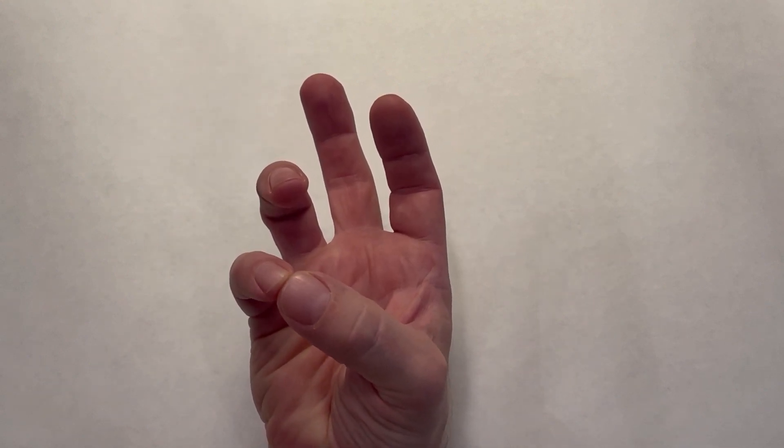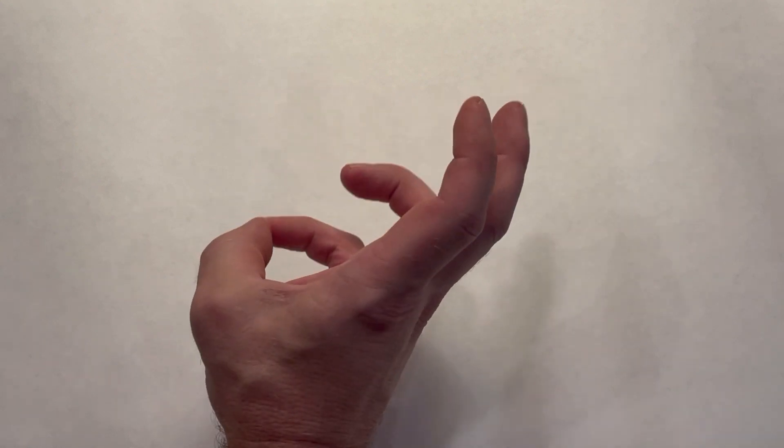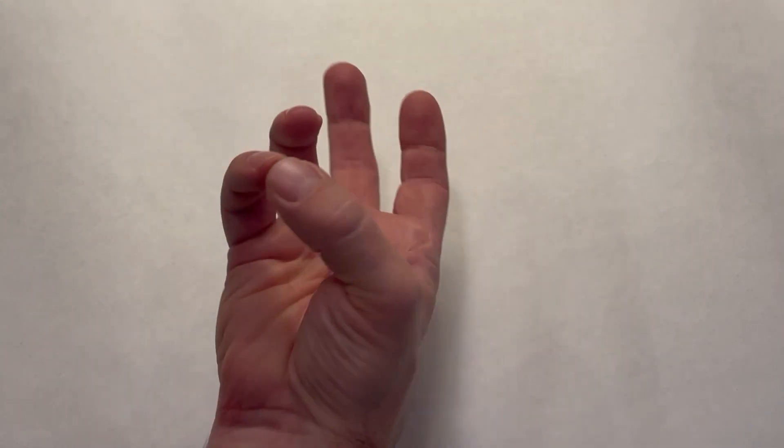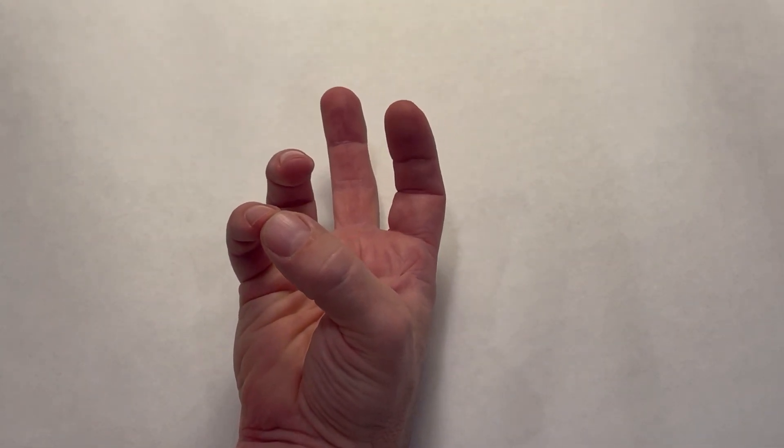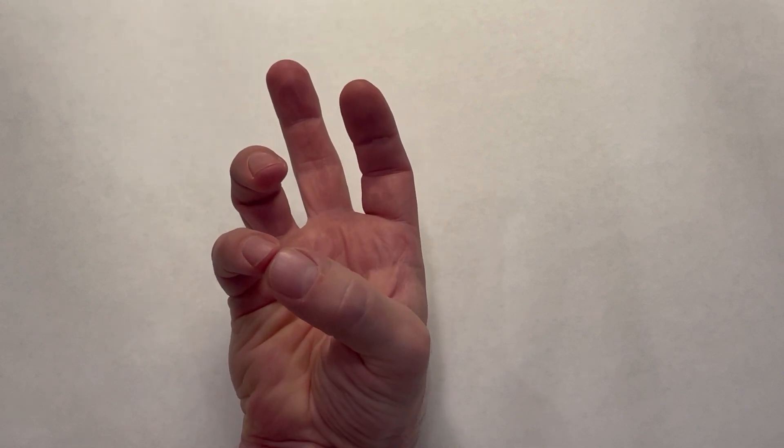Here we have opposition, and you can see with opposition, we have a fair amount of abduction or palmar abduction. You can also see here that the thumb metacarpal has pronated a bit to bring that thumb tip directly in line with the small finger tip.